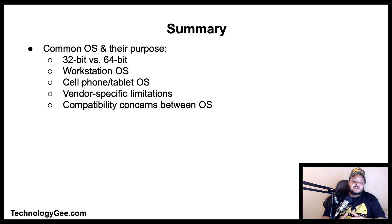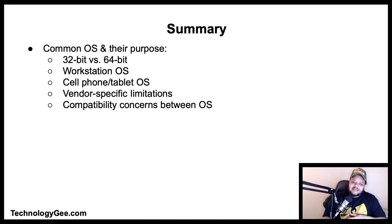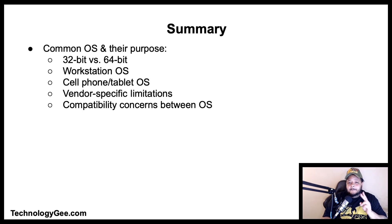In summary, we have talked about common operating systems and their purposes as it relates to 32-bit versus 64-bit workstations, cell phones and tablets, and vendor-specific limitations and compatibility concerns as it deals with operating systems. If you felt like you have gotten something valuable from this information, go ahead and hit the like button, the share button, drop a comment, and subscribe to this channel. Also go check out my website, TechnologyG, to get read up on the latest and greatest to help you successfully pass the CompTIA 220-1002 examination. Until next video, peace.